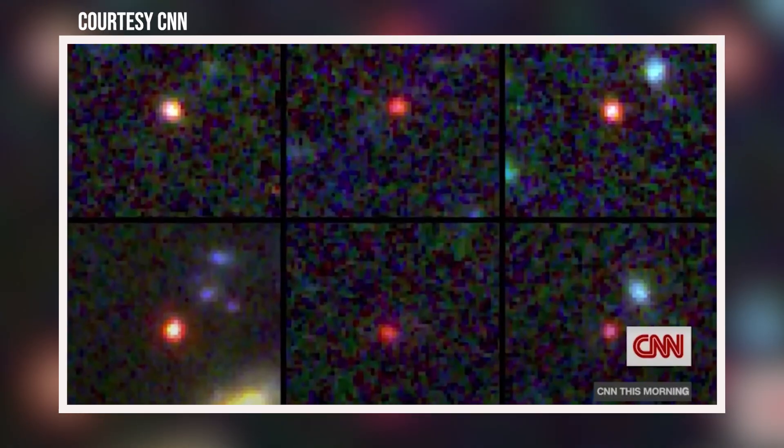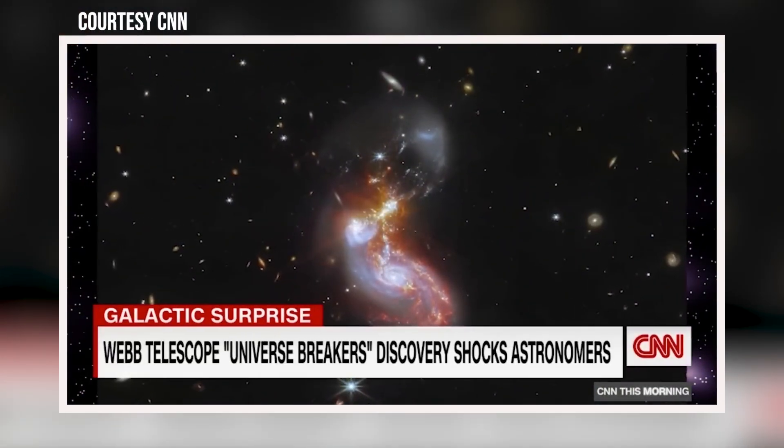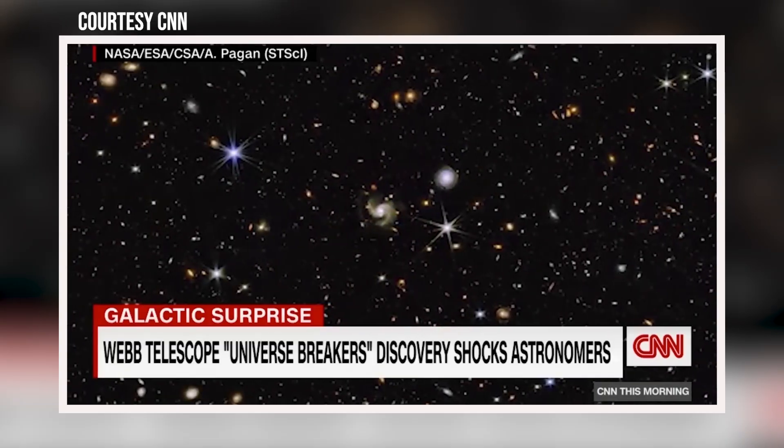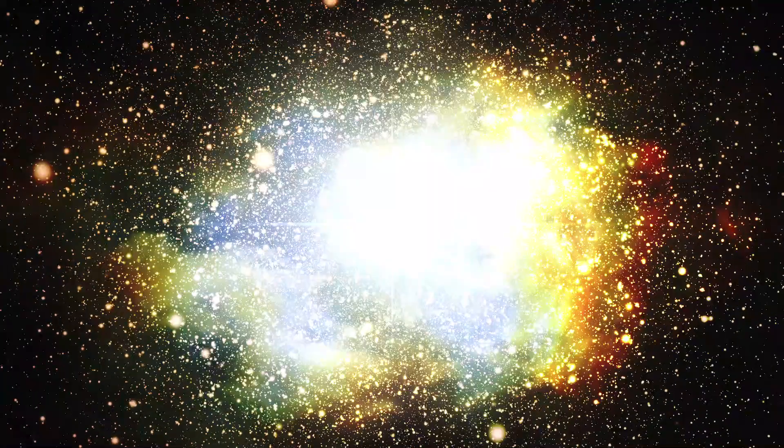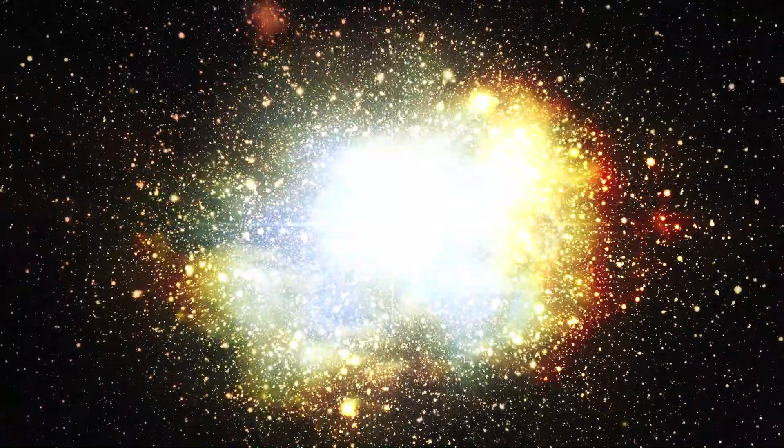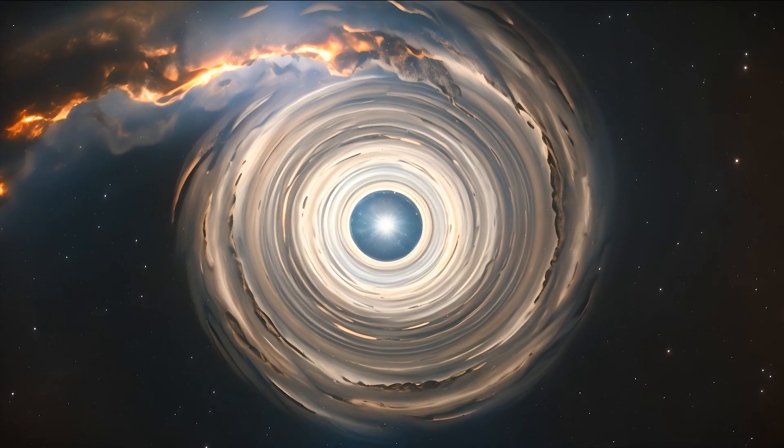James Webb Space Telescope. Astronomers have spotted six massive galaxies dating back to within 500 and 700 million years after the Big Bang. What if everything we thought we knew about the universe, its beginning, its rules, even gravity itself was wrong.